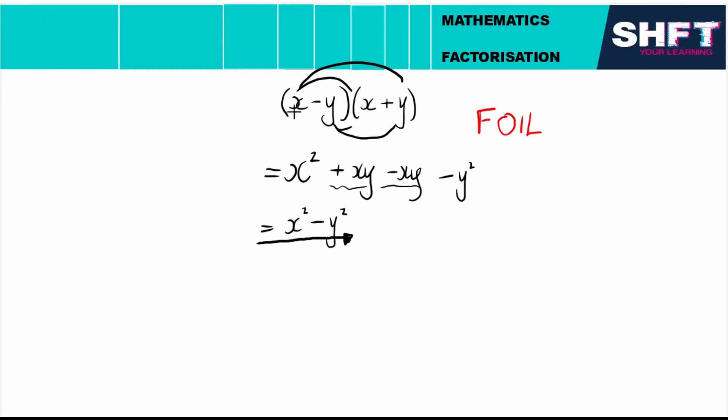You will see that whenever you simplify a binomial multiplied by a binomial—two brackets that are being multiplied with the first term in both is the same and the last term in both is the same, but the signs are different, one is a plus and one is a minus—then it will always give you the difference of two squares.